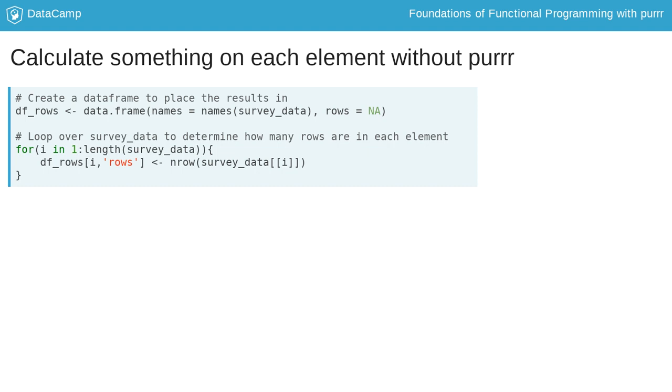To check on the number of rows in each element without purrr, we first create a new data frame to store our results in. This new data frame, called df_rows, has two columns. One called names, which contains the names from our list, and one called rows, which is currently empty. This is where we will put the output from our for loop.